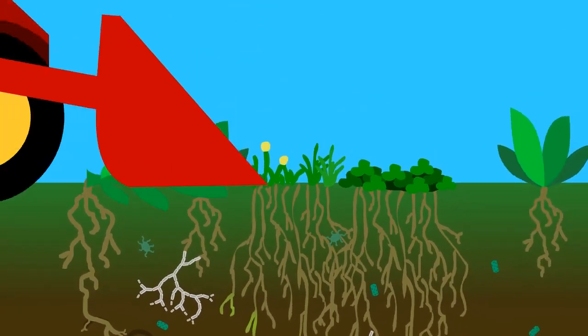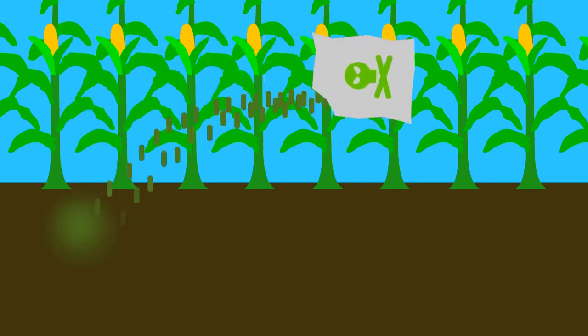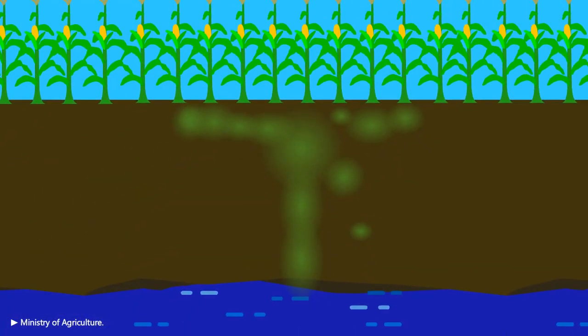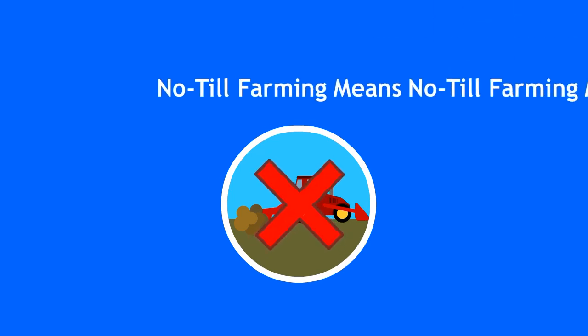Once soil is turned over by a machine, most of these organisms are killed, so the crops must rely on chemical fertilizer, which ends up leaching into the water. Central to no-till farming is to not do that.